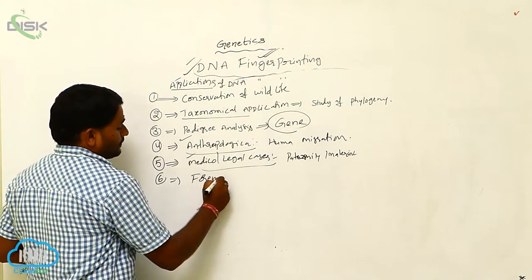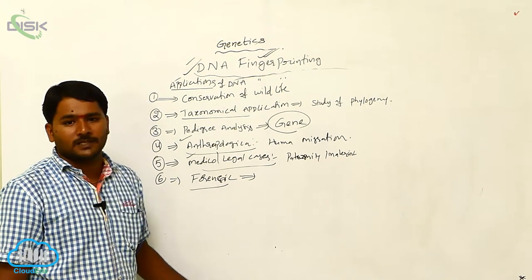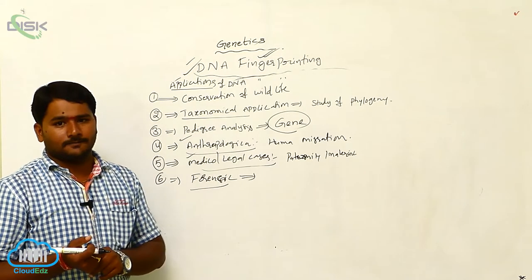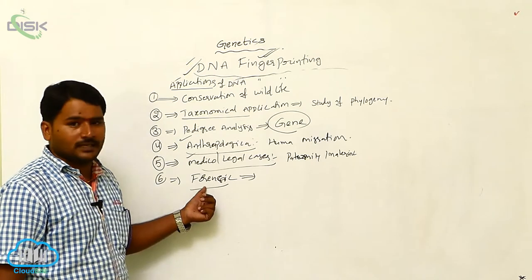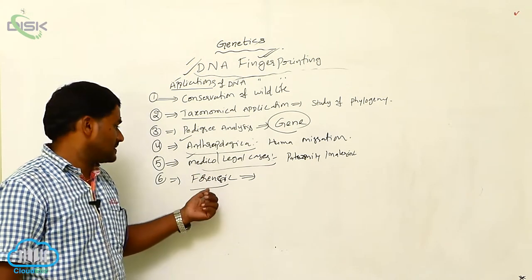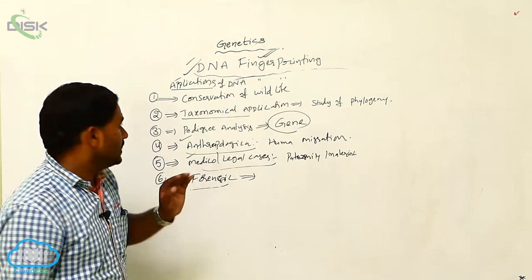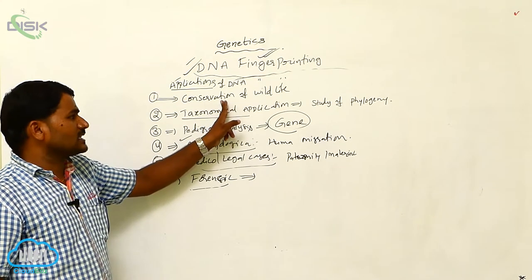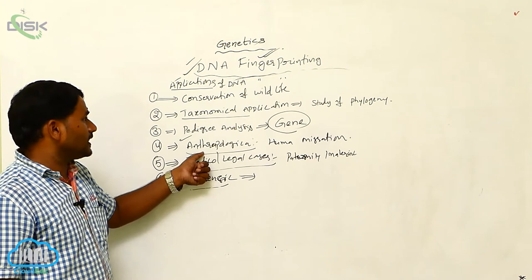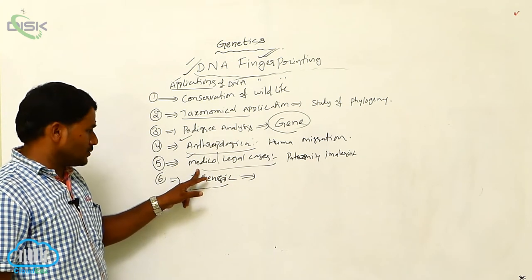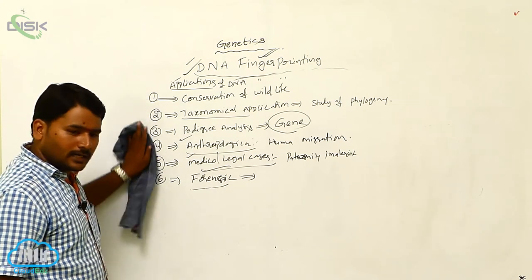The next application is forensic. Forensic applications are especially used to identify the actual criminal — the same example we discussed about who is the criminal. So to solve the problem of identification of a criminal, forensic investigations in murder and rape cases use DNA fingerprinting technology. So these are the six applications: DNA fingerprinting is used for conservation of wildlife, taxonomical applications, pedigree analysis, anthropological studies, medico-legal cases, and forensic study for the identification of the criminal.